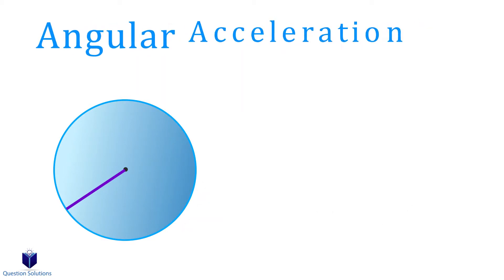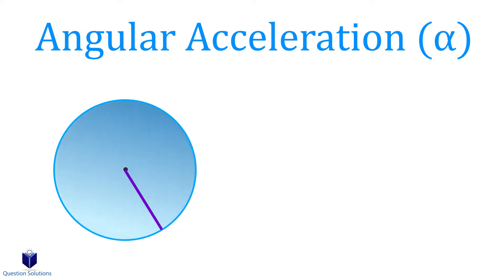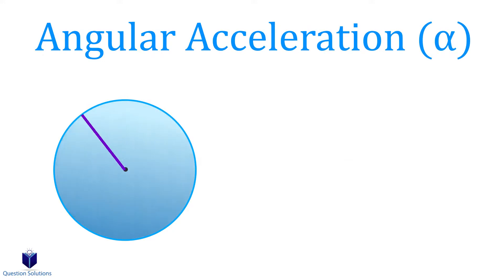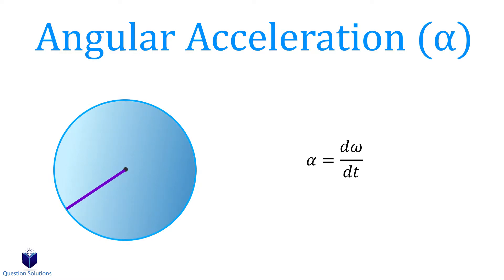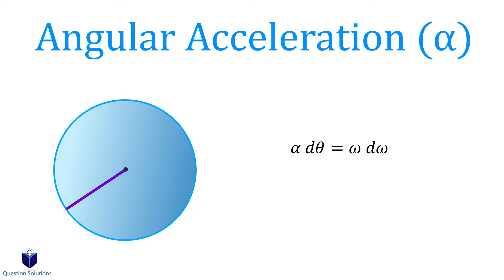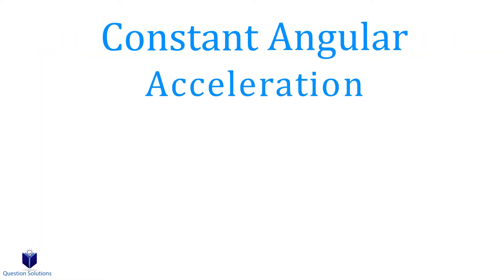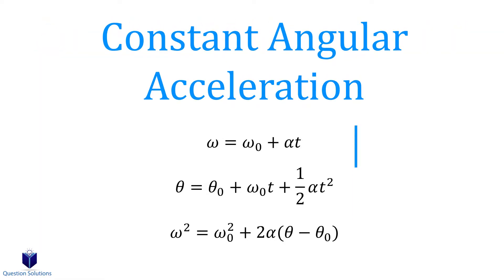Now for angular acceleration — that's the derivative of our angular velocity with respect to time. We show angular acceleration using the Greek letter alpha. We also have one more equation which relates angular acceleration with angular velocity if time is eliminated. If we have questions with constant angular accelerations, we can use these equations.